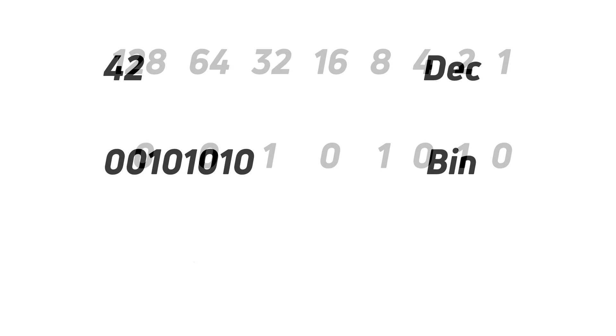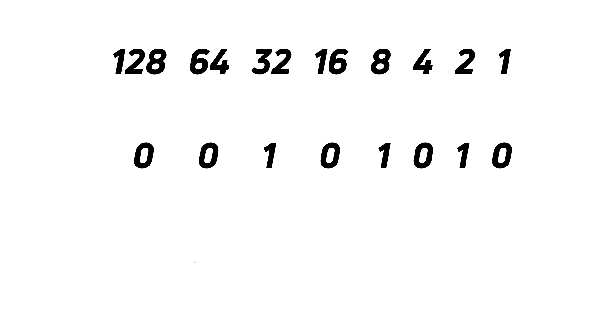So if we take the number 42 for example — which in decimal is four lots of tens and two lots of units — in binary that's 00101010. The leading two zeros mean there are no 128s and no 64s, and on the right-hand side we see there are no ones but there is one two. So again, the least significant part is on the right and the most significant part is on the left.